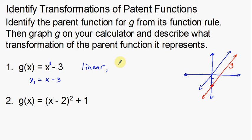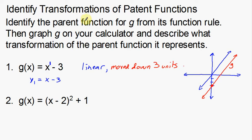There's where G of X is — the new function. Look at what that negative 3 did: it brought the parent function down 3 units. So I'm going to describe this as: moved down 3 units. This is a linear function, and it has moved down 3 units from the parent function. I needed a graphing calculator to see what the G function looked like when graphed. Now let's go on to the next example.